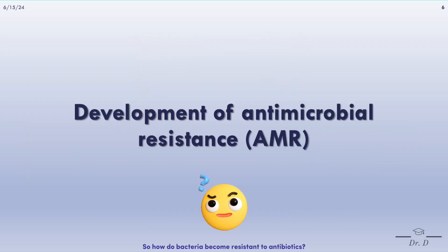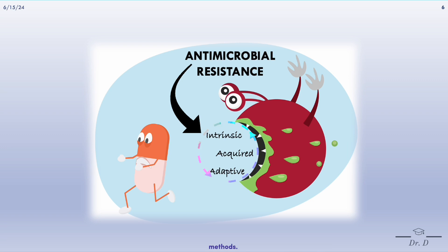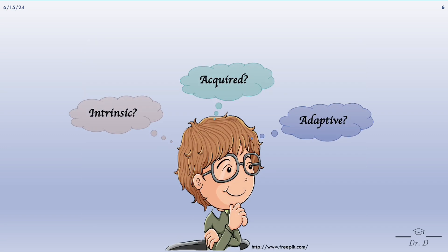So how do bacteria become resistant to antibiotics? Bacteria develop resistance either via intrinsic, acquired, or adaptive methods. Let us take a closer look.